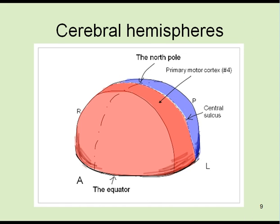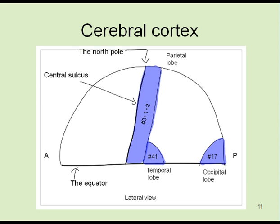For convenience of explanation, cerebral hemispheres are compared to northern half of the earth. This is the north pole and this is the equator. Anterior half painted in red corresponds to frontal lobe. Posterior half painted in blue corresponds to parietal, occipital and temporal lobes.